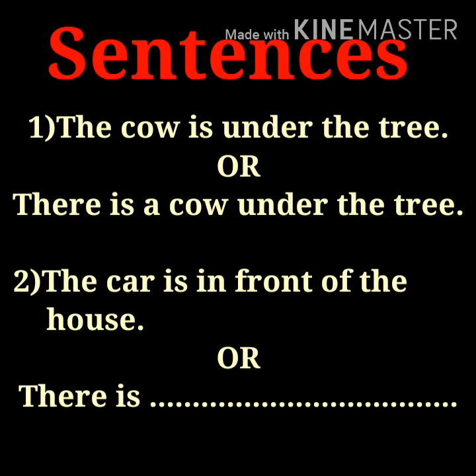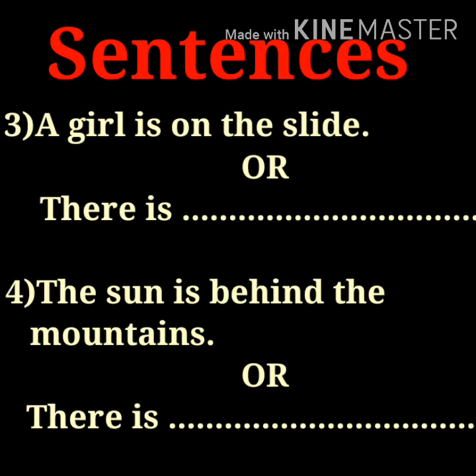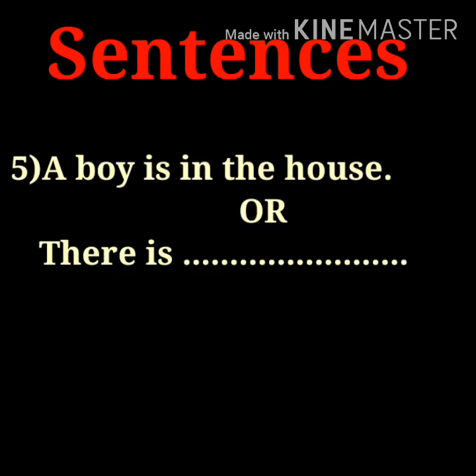Sentences: The cow is under the tree. The car is in front of the house. A girl is on the slide. The sun is behind the mountains. A boy is in the house.